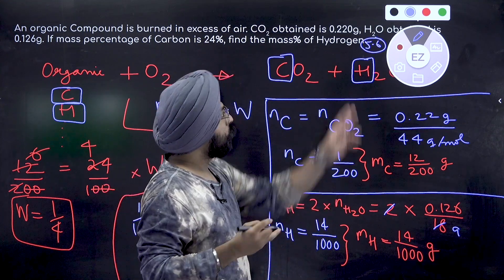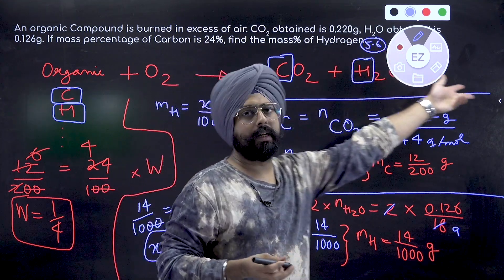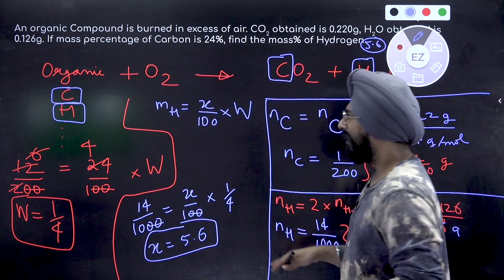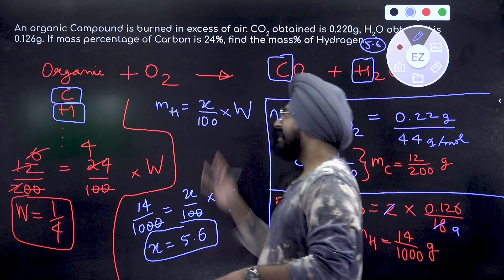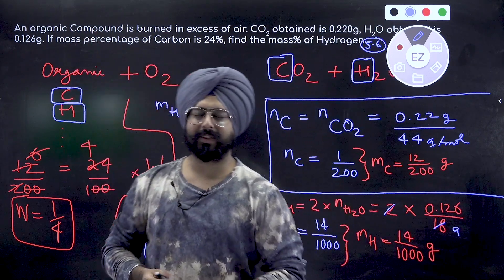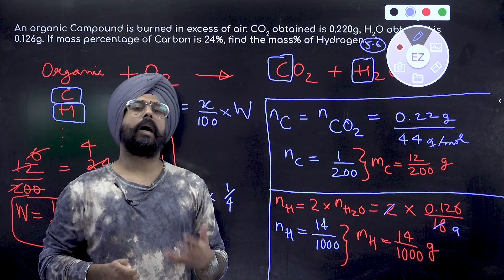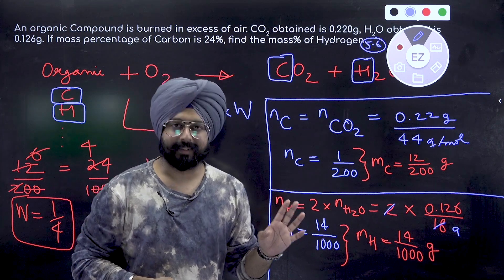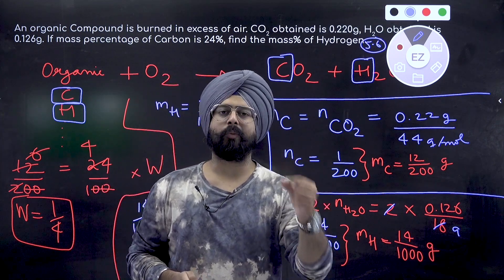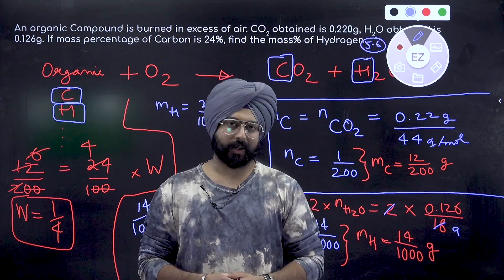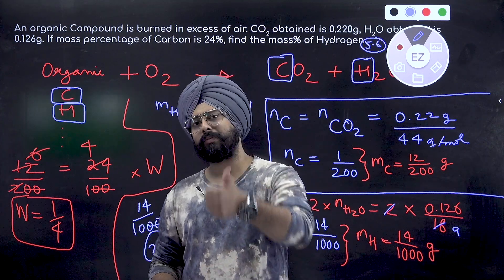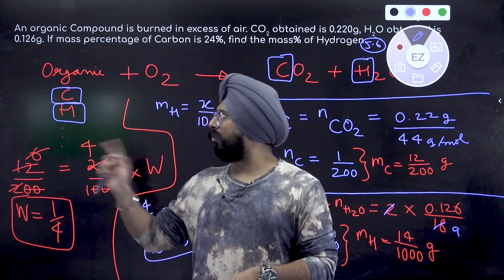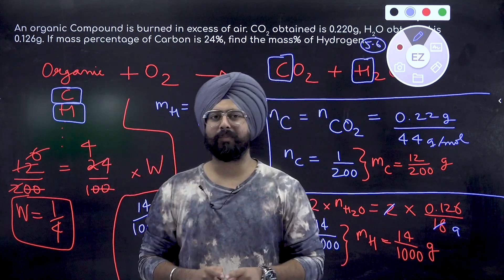So 5.6 is the correct answer. This was asked as an integer type question, so rounding to the nearest whole number gives 6. Simple question, no rocket science — this was asked in JEE Main. The concepts involved are essentially the law of conservation, or principle of atomic conservation. If you enjoyed it, hit the thumbs up, subscribe to the channel, and hit the bell icon so you don't miss these every single morning.